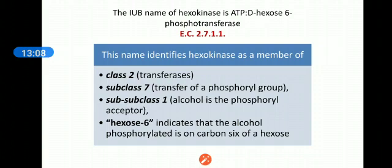The name of hexokinase is ATP-D-hexose-6-phosphotransferase, and its EC number, which is Enzyme Commission number, is 2.7.1.1.